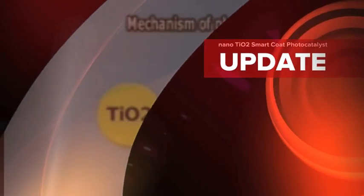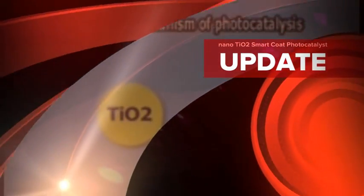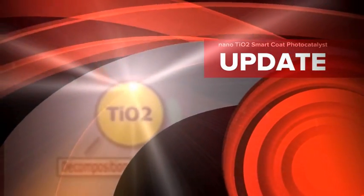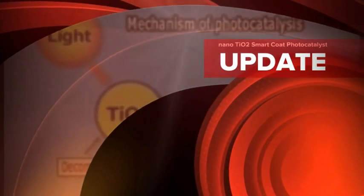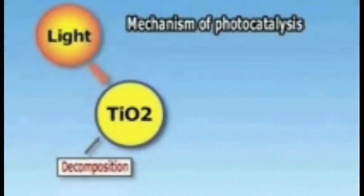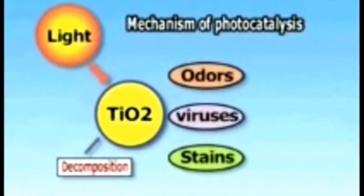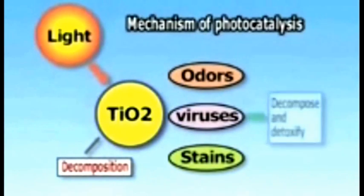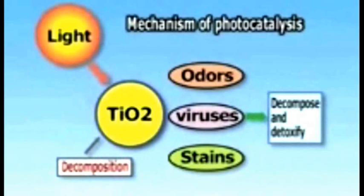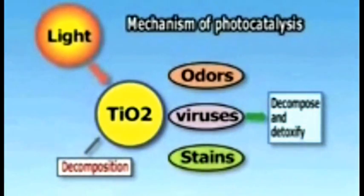Photocatalysis: when light energy from sunlight or fluorescent light is irradiated on titanium dioxide, a strong power of decomposition is generated on the surface of the titanium dioxide by its properties. By this reaction, various organic matters that come near the titanium dioxide are continuously decomposed until they become harmless. Photocatalysis' effect is almost permanent.